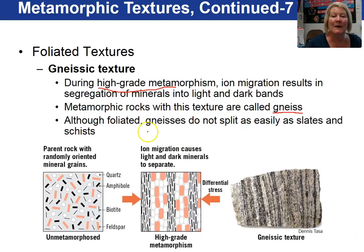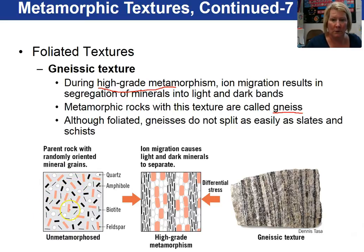Gneiss does not split as easily as slates and schists. The parent to the gneiss is an igneous rock with randomly-oriented minerals. The ions then migrate into light and dark bands under high-grade metamorphism due to differential stress. And this is what the gneiss looks like — so gneiss have gneissic textures.